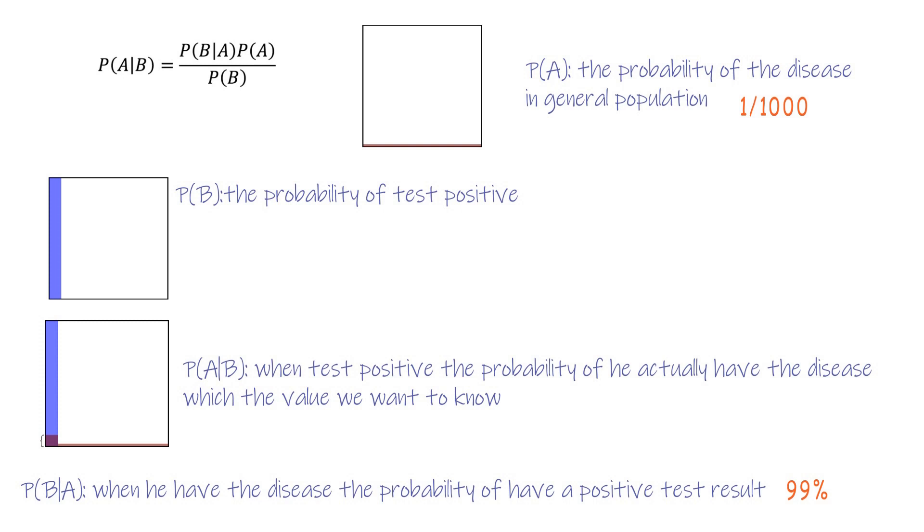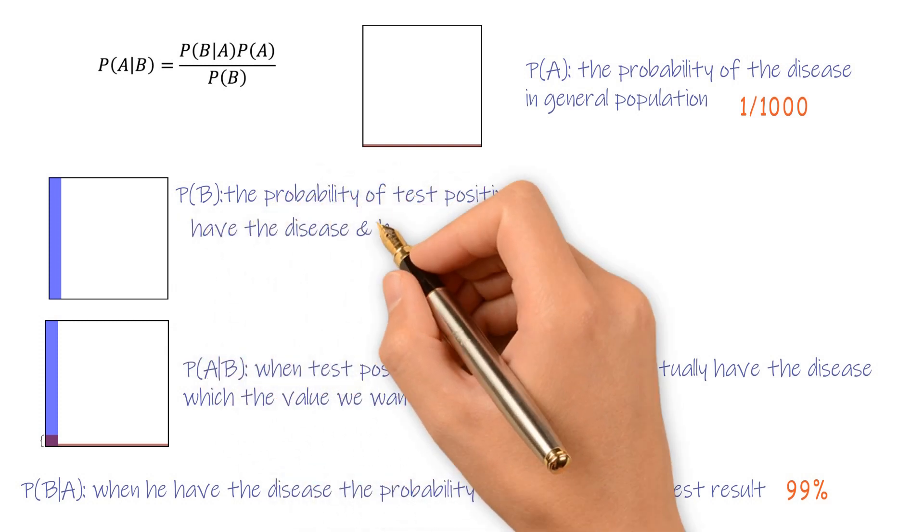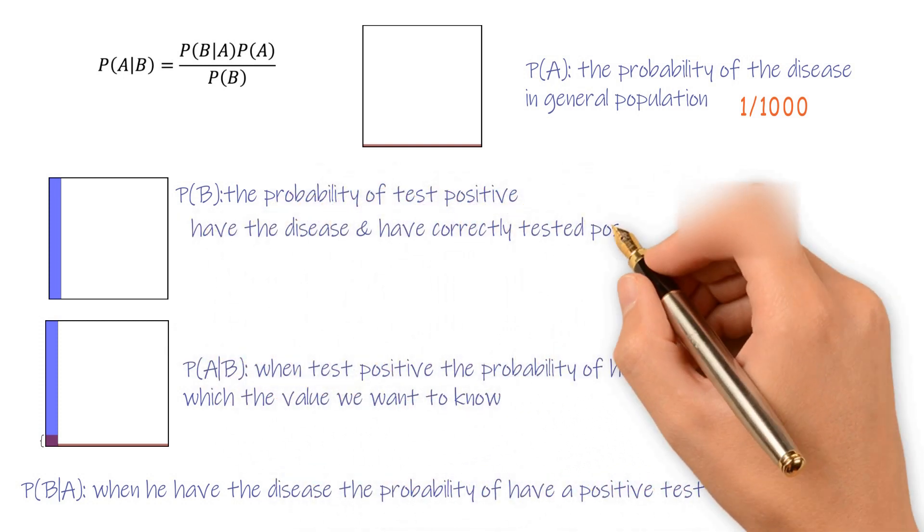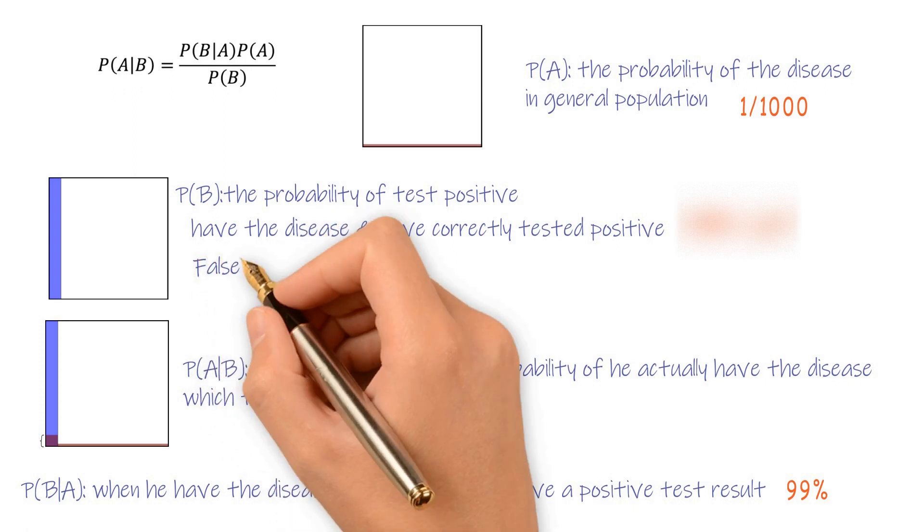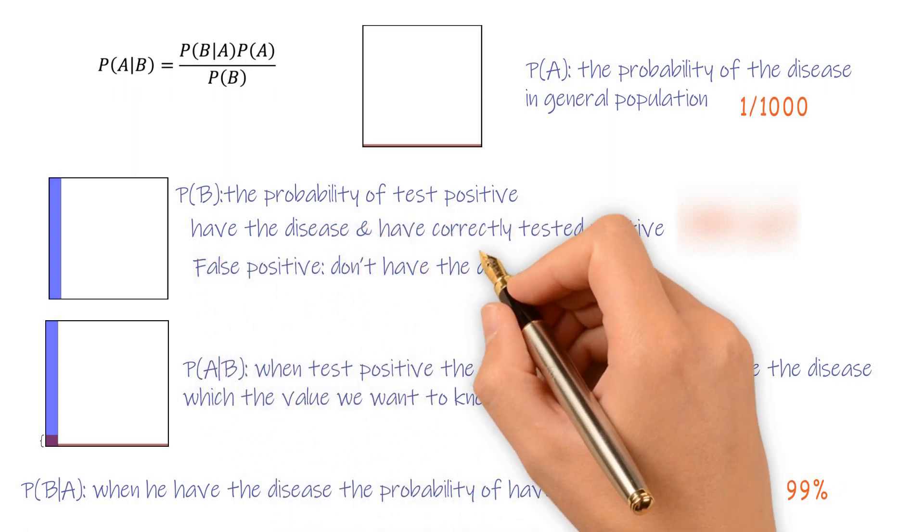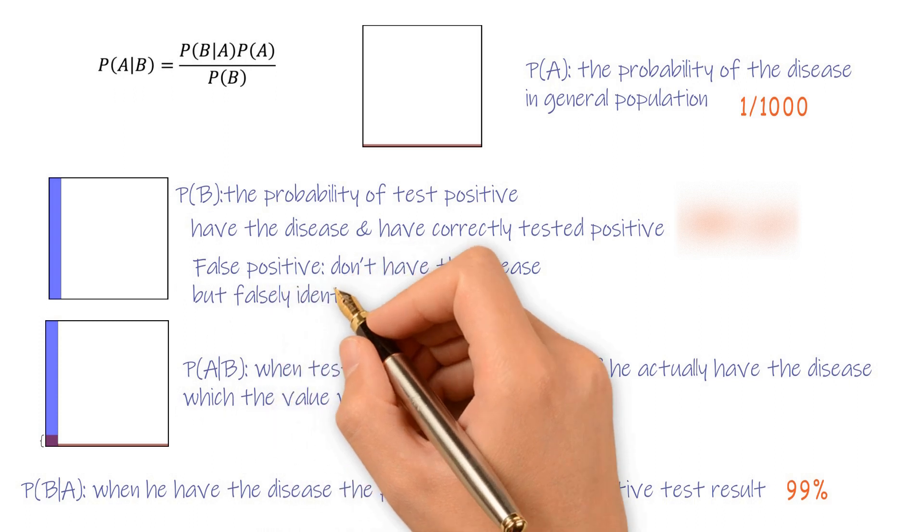P(B), the probability of test positive, actually contains two parts. One, it has this disease and correctly test the positive. Second, false positive. Don't have the disease, but falsely identified.